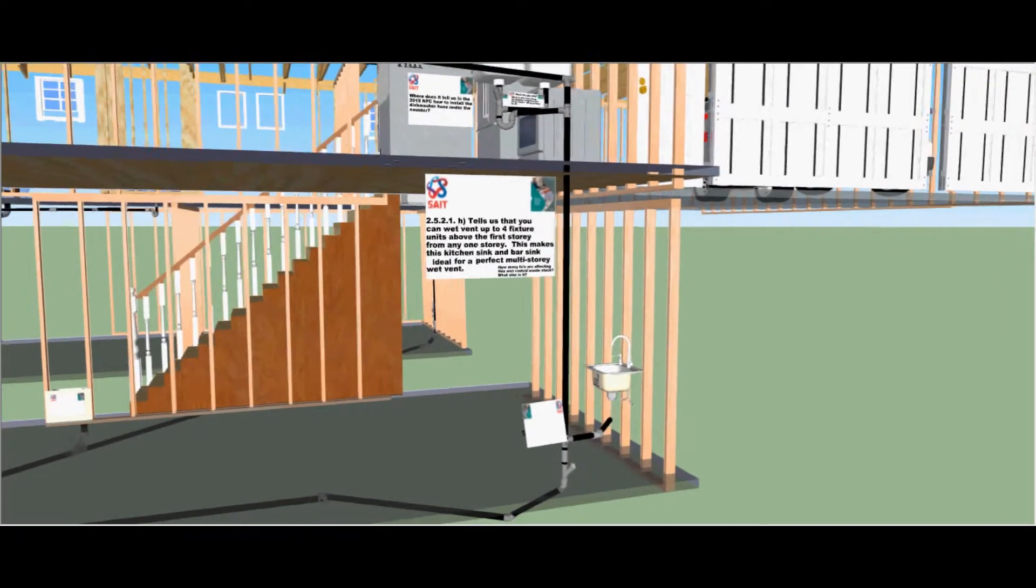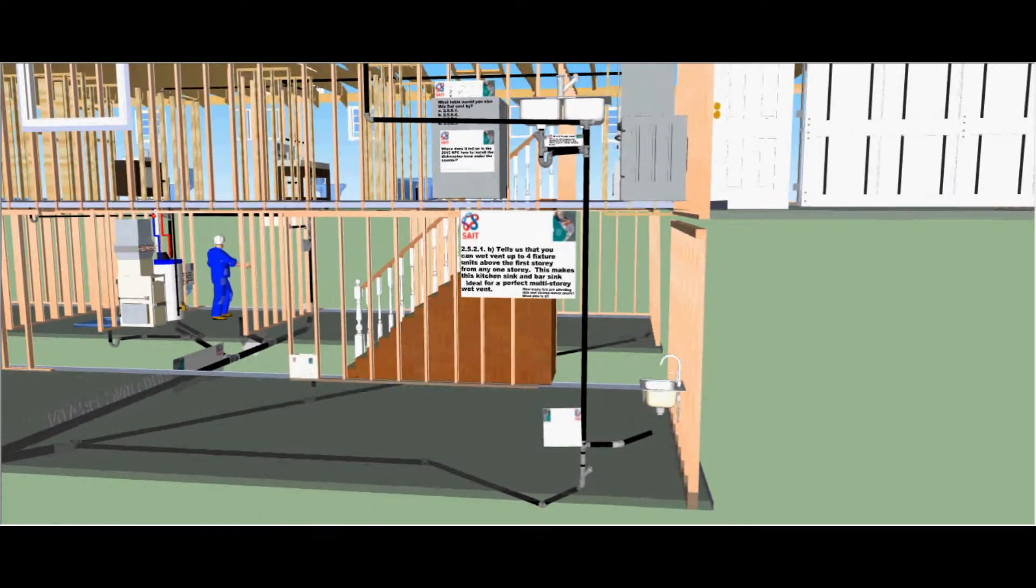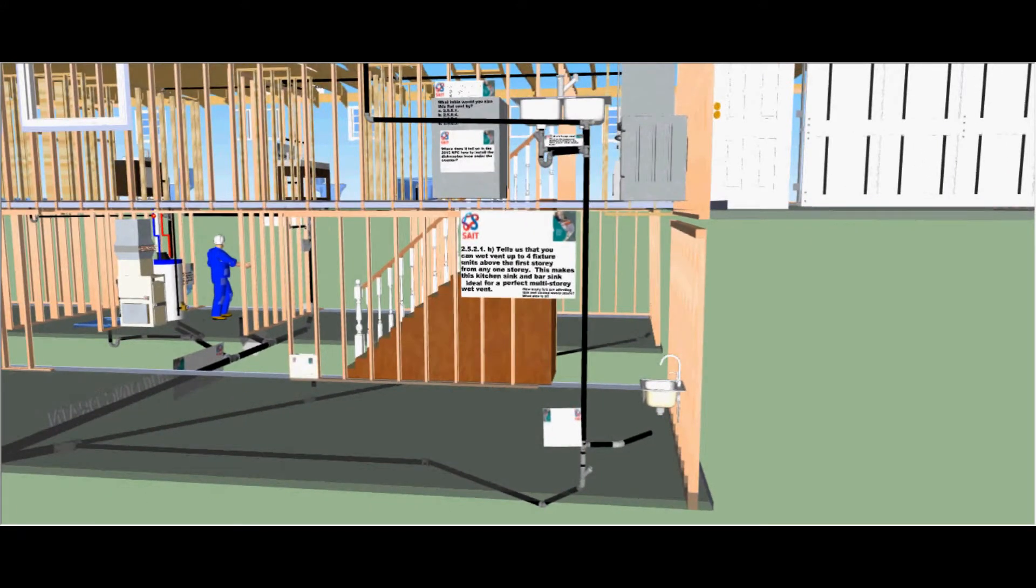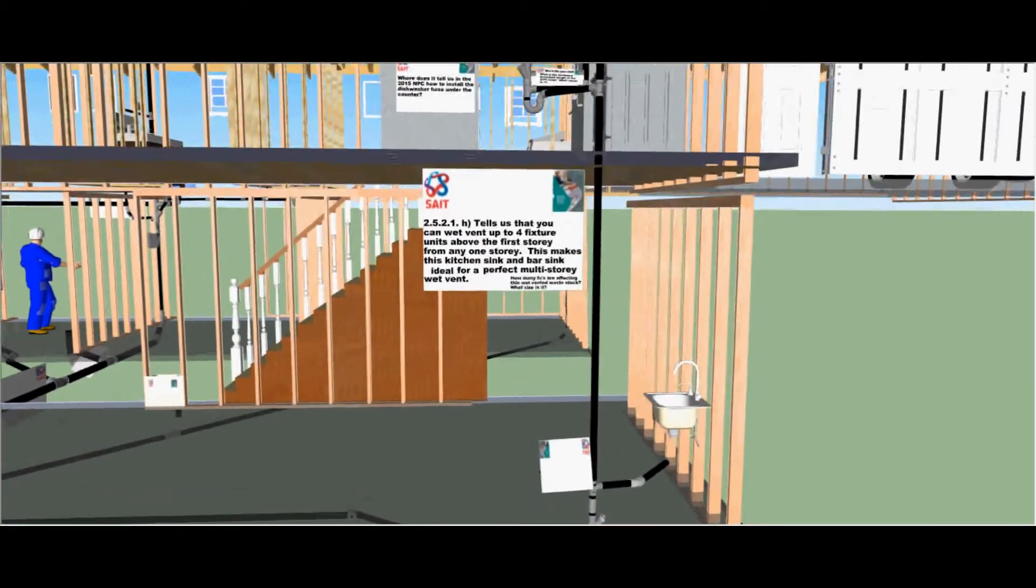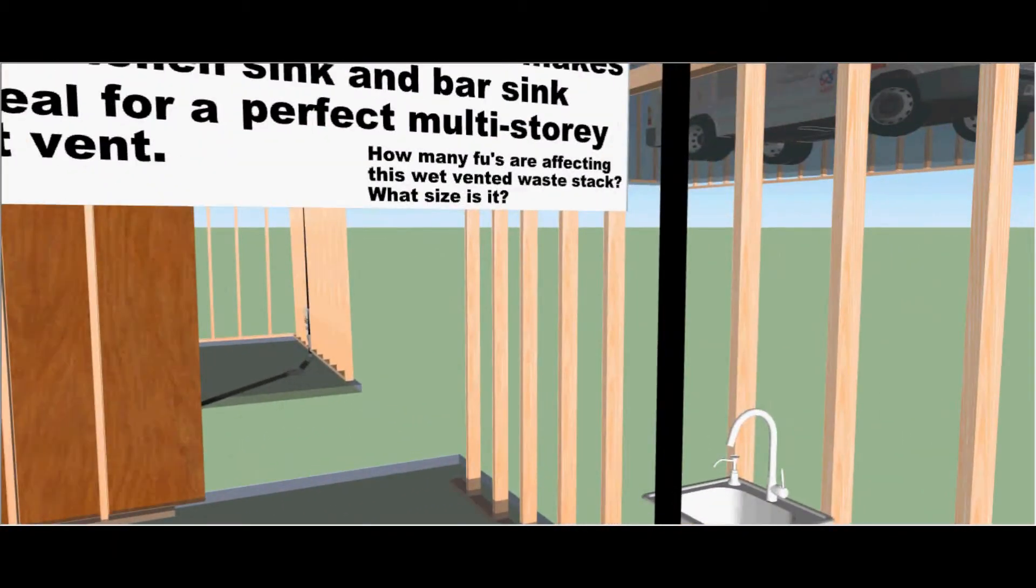Code clause 2521 tells us that you can wet vent up to four fixture units above the first storey from any one storey. This makes this kitchen sink and bar sink ideal for a perfect multi-storey wet vent.